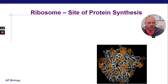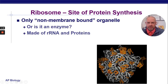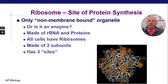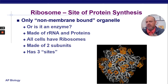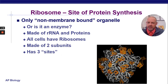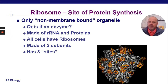The ribosome itself looks like this down here in this picture. It's unique — it's the only non-membrane bound organelle. We usually consider it an organelle even though it doesn't have a membrane. It's actually made of RNA and proteins, so it's almost like an enzyme. We do typically call it an organelle, but it's very active — it's going to be making proteins for us. All ribosomes have two subunits and three sites.